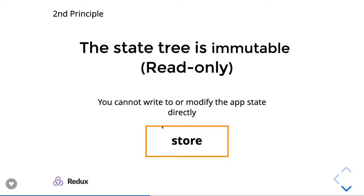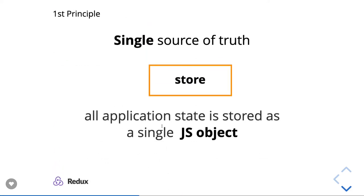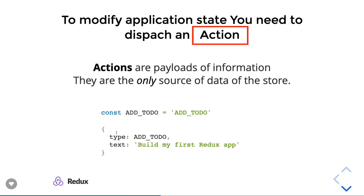You modify an array by doing something like dot push, but that modifies the existing array, so you will not be doing that in Redux. To modify the state you need to dispatch an action. So we have three things: store, which is a big JavaScript object; the state tree, which is immutable and read-only; and we use reducer functions to give you the new state based on the action. Actions are just plain JavaScript objects with a type, like add to-do, increment, decrement, delete user, and so on.